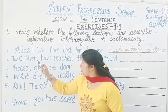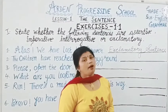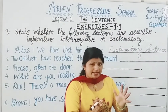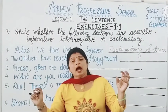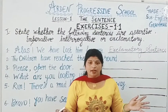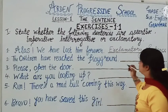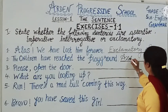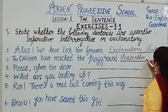Second one is: The children have raised the playground. In this sentence, you can see that it is stating that children are playing in the playground. By seeing this, you can know which sentence it is. Yes, this is an assertive sentence, because it is stating a fact.